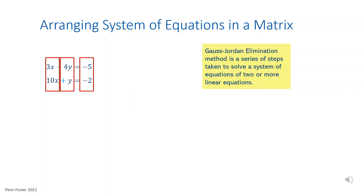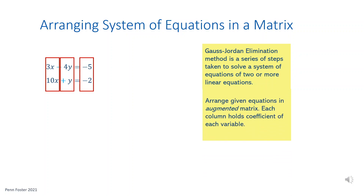Start by arranging the system in matrix form. Simply transfer the x coefficients to form the first column, the y coefficients in the second column, and finally transfer in the constants. Draw a line to separate coefficients from constants. Since this matrix shows coefficients and constants, it's called an augmented matrix.